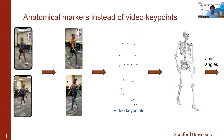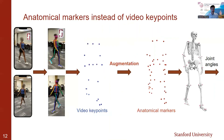After training the networks, we incorporated them as part of the pipeline to estimate joint angles from videos. We added this extra step to predict anatomical markers from video keypoints, and we used those anatomical markers as input to our modeling and simulation software, with the goal of improving the accuracy and robustness of joint angle estimation.